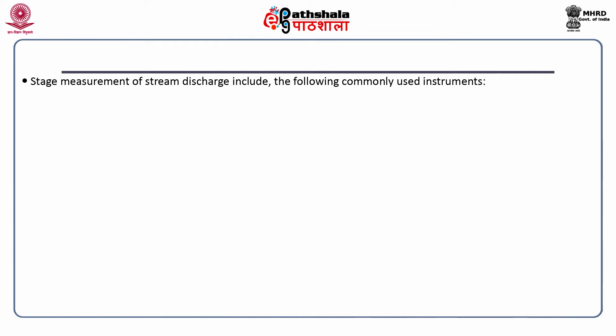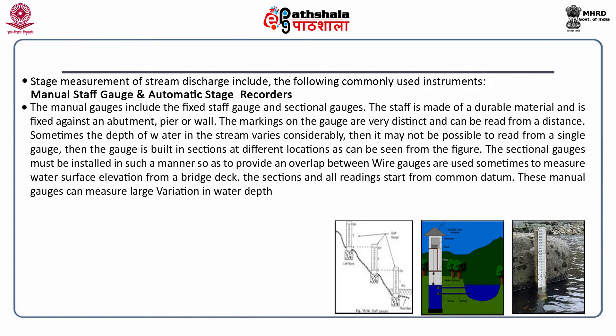When measuring discharge we also measure the stage of the river — that is, the depth of flow in the stream or river. This is the most common and oldest method of measuring discharge. We measure the water level in the stream and align it with discharge, so if the depth is 5 meters, the corresponding discharge is a known number of cubic meters per second.